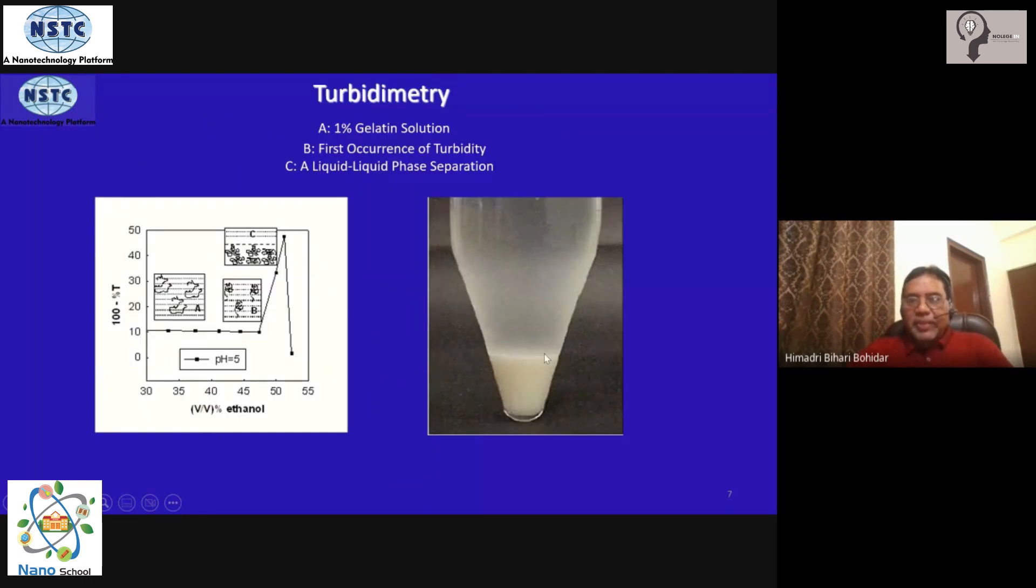So this is what I've been telling now. This is the dense phase which is the coacervate here. And this cloudy suspension and mist here, these are all nanoparticles suspended in the supernatant. And this is what needs to be collected through centrifugation and then lyophilization to get the powder out of it.